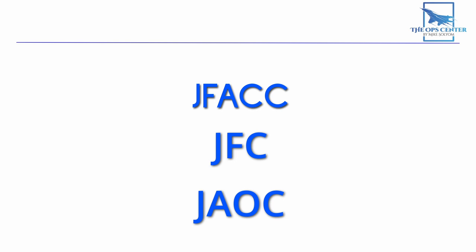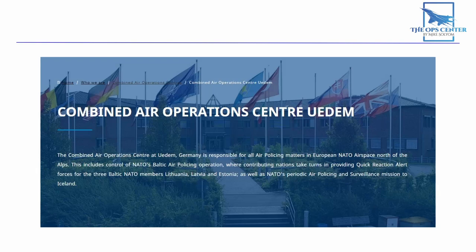If an operation becomes a multinational effort, then these acronyms would change. The J at the front would become a C, which — depending on the organization — could stand for either Coalition or Combined. Either way, it means a multinational effort is in effect, and you can expect to see a CFC along with a CFAC running things. The central control hub would be called the CAOC. NATO operations fall under this structure, and other than the name change, they work exactly the same.